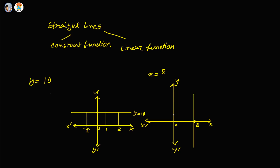If y is equal to 1, x is equal to 8. If y is equal to 2, x is equal to 8. Or if y is equal to minus 2, x is again equal to 8. So we can write this constant function: x equal to 8.